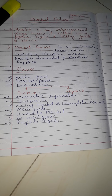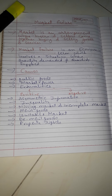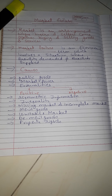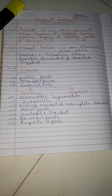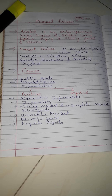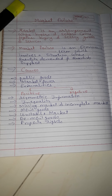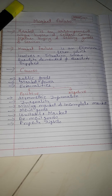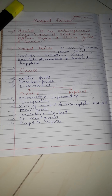The next cause is demerit goods. Demerit goods are goods whose manufacture harms society. Examples include cigarettes, alcohol, etc. When the production of such types of goods increases, it automatically leads to market failure.